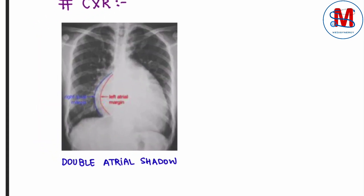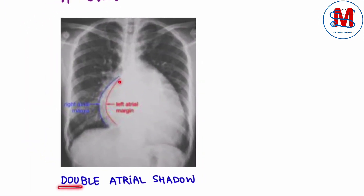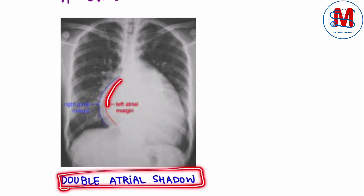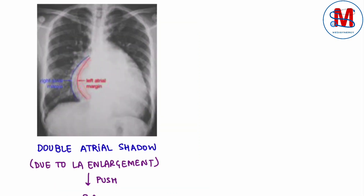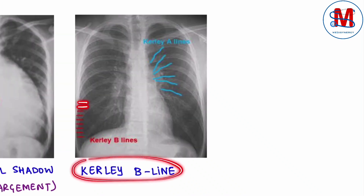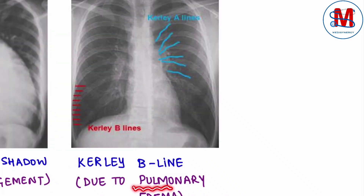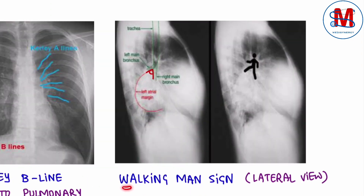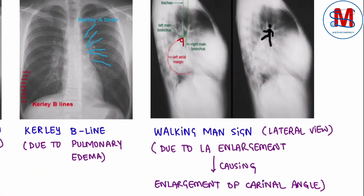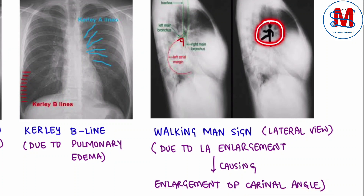Usi ke saath, agar hum chest radiograph karwate hain, to hum ko Double atrial shadow dekhne ko milta hai — jo left atrial enlargement ke kaaran hota hai, jo right atria ko push karta hai. Another finding hogi Kerley B lines, which is due to pulmonary edema. Aur teesri radiograph finding hogi Walking man's sign, jo lateral view mein dikh sakta hai, which is also due to left atrial enlargement causing enlargement of the carinal angle.